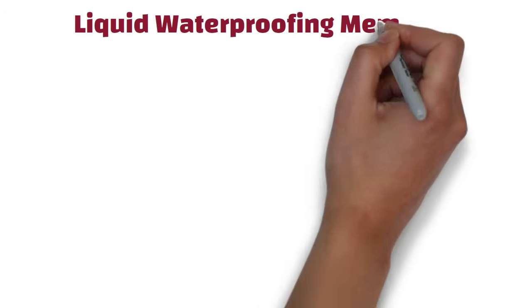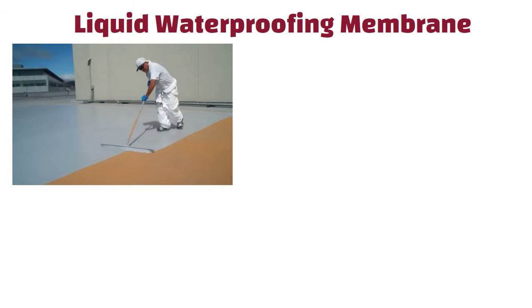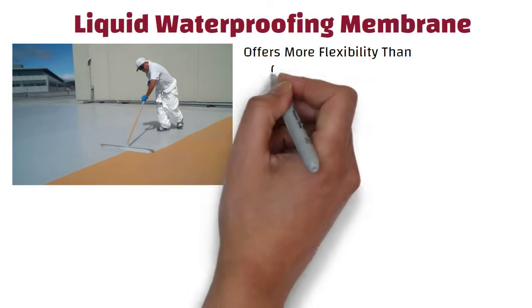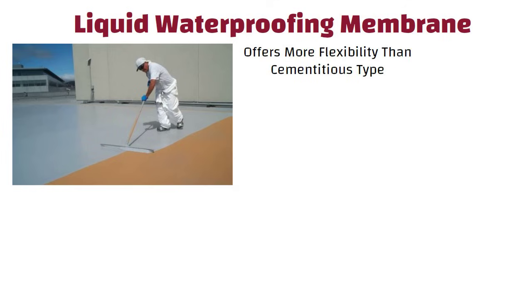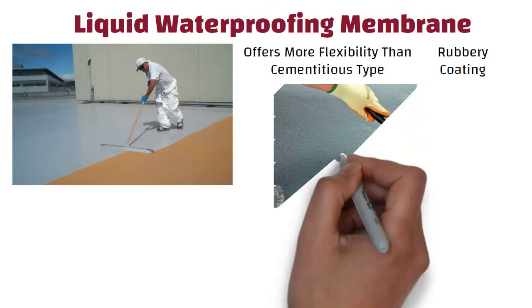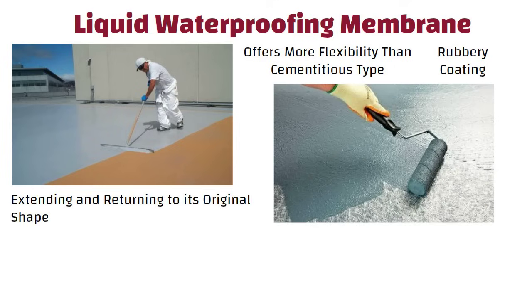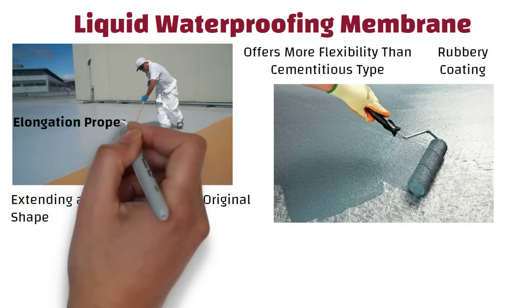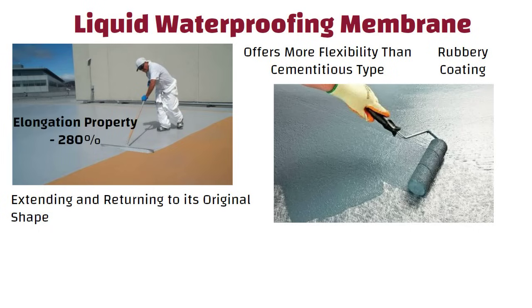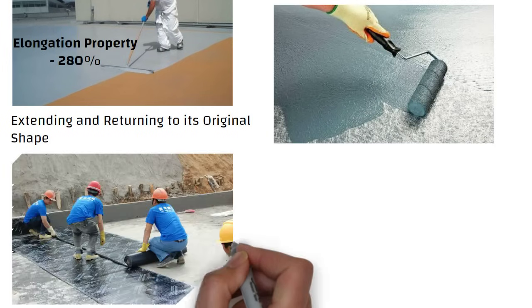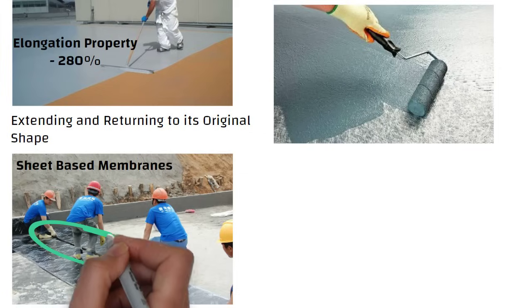Now, let us discuss liquid waterproofing membrane. It offers more flexibility than cementitious type of waterproofing by forming a rubbery coating on the applied surface. This membrane is capable of extending and returning to its original shape without damage. The elongation properties of the coating can reach as high as 280%. These are generally considered to be superior to sheet based membranes as they are joint free.